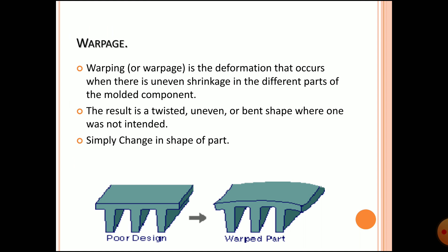The next defect is warpage. This mostly happens when the length of your component is much longer. Warpage is a deformation that occurs when there is uneven shrinkage in different parts of the molded component, resulting in a twisted, uneven, or bent shape where one was not intended. Simply put, any change in shape is called warpage.